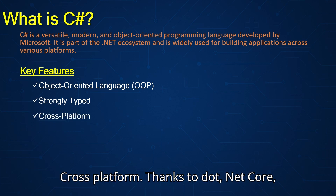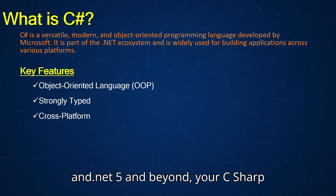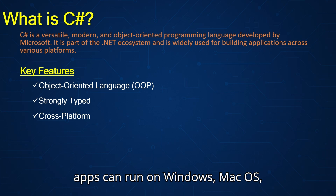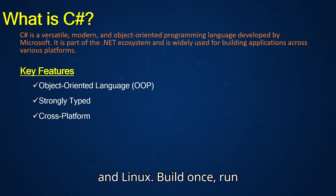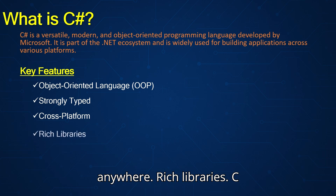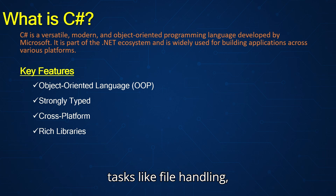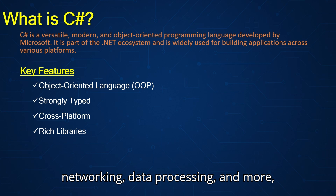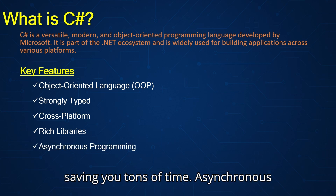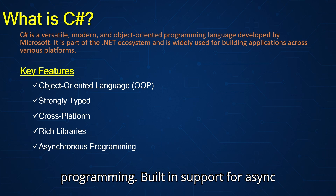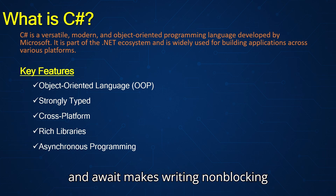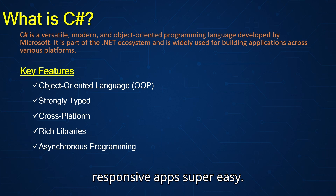Cross-platform: thanks to .NET Core and .NET 5 and beyond, your C-sharp apps can run on Windows, macOS, and Linux — build once, run anywhere. Rich libraries: C-sharp comes packed with libraries for tasks like file handling, networking, data processing, and more, saving you tons of time. Asynchronous programming: built-in support for async and await makes writing non-blocking, responsive apps super easy.